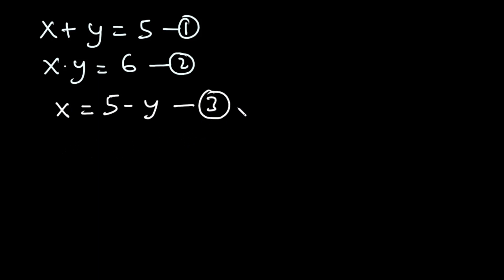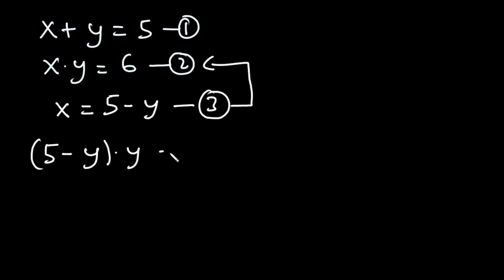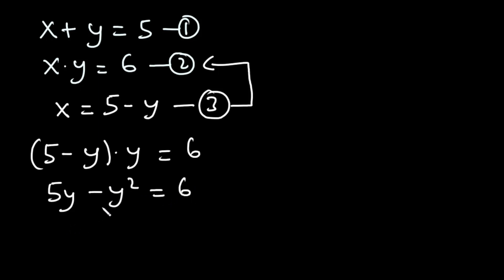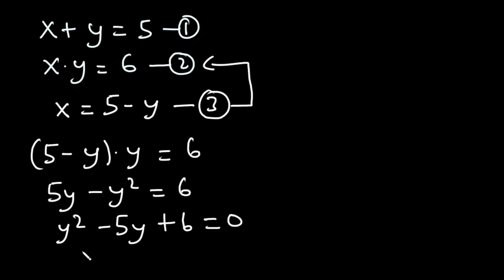Next, let's substitute equation three into equation two. So we have (five minus y) times y is equal to six. Expanding: five times y is 5y, and negative y times y is negative y squared. Transposing to the right-hand side gives us y squared minus five y plus six is equal to zero. The coefficient of the y squared term is one.